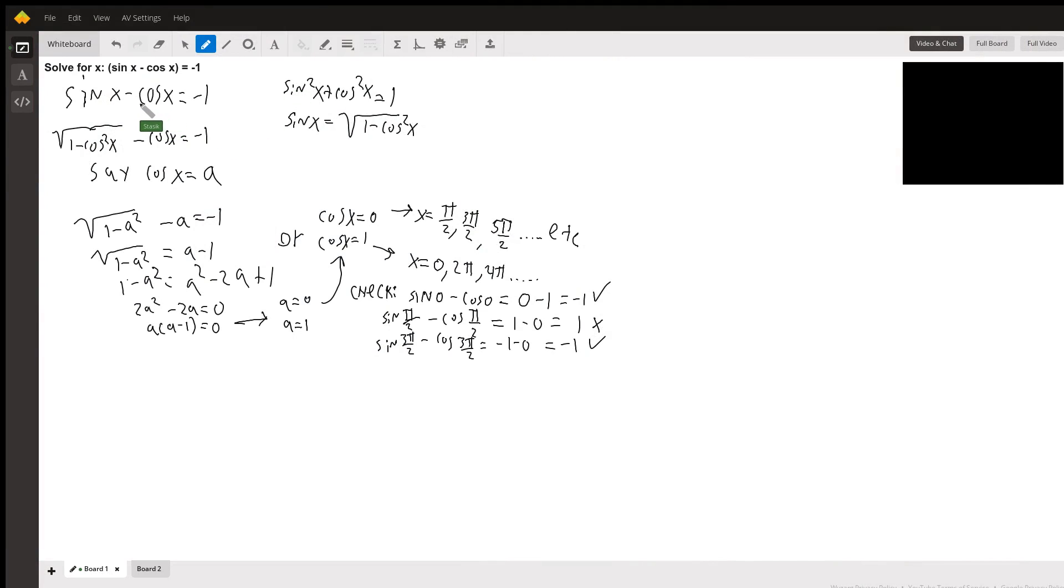Okay, to approach this problem, we're going to use this common equation: sine squared x plus cosine squared x equals one. We can also, by subtracting cosine squared x from both sides, rewrite this as sine squared x equals one minus cosine squared x, and we basically plug this whole fragment into sine x for here.